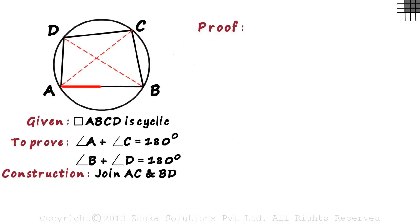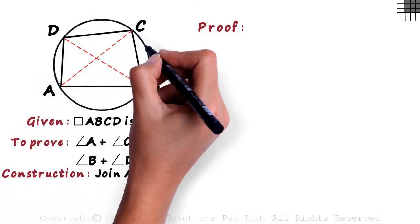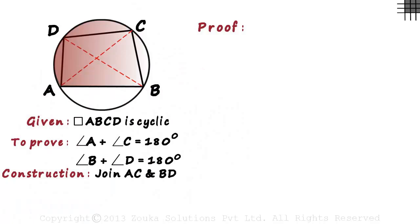There are four chords AB, BC, CD, and DA in this circle, and each one divides the circle into two segments. Now understand this really well. The colored region is a major segment formed by chord AB, and angle ACB and angle ADB lie in that segment.